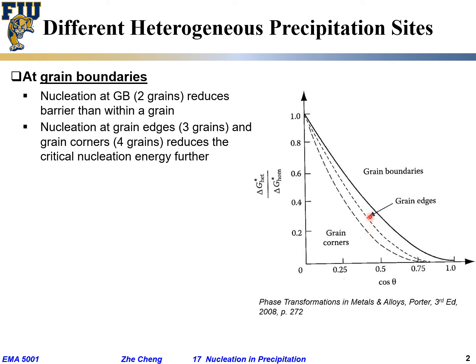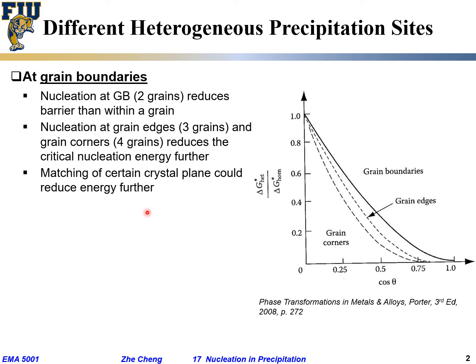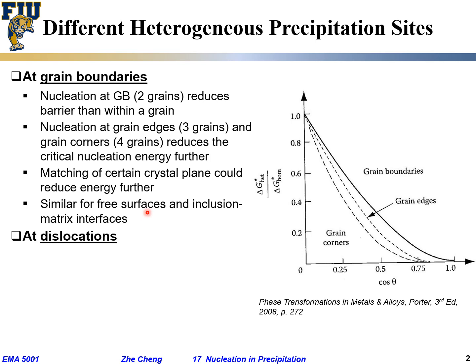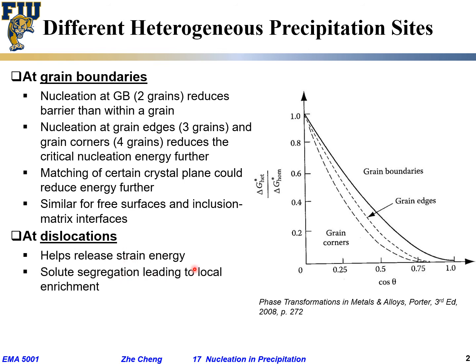The matching of certain crystal planes leads to further reduction in system energy — the same applies for surface energy and inclusions. Similarly, precipitates may also occur at dislocations, which helps release strain energy and lowers the barrier. Nucleation may also happen at vacancy sites — a missing atom — and it also helps the diffusion rate.